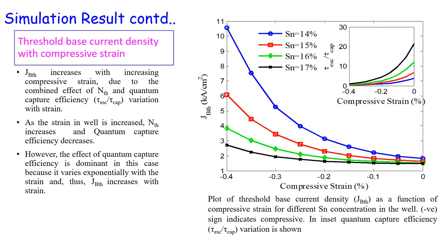Now, calculating the threshold base current density J_VTH, the graph shows that J_VTH increases with increasing compressive strain due to the combined effect of the threshold carrier density N_TH and quantum capture efficiency. As strain in the well increases, the differential gain G decreases, so N_TH increases because more carriers are required to achieve the threshold modal gain. Quantum capture efficiency also decreases when compressive strain increases, as shown in the insert of the figure.